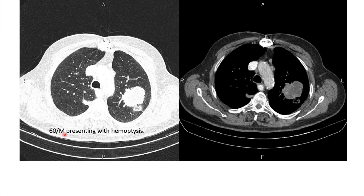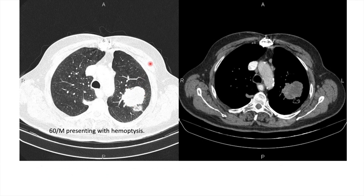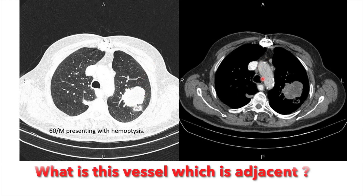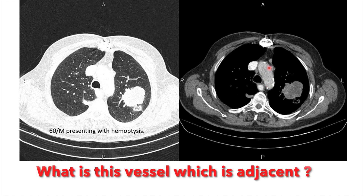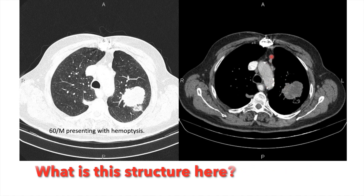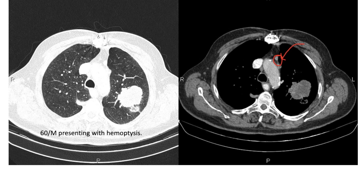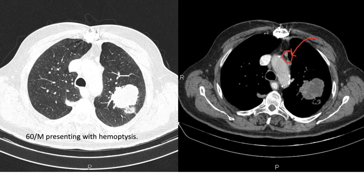This is a 60-year-old male presenting with hemoptysis. We see a mass in the left lung. In which lobe is this mass located? What is this fissure which is adjacent to this mass? And what is this structure here? If you can't answer these questions, then this video is for you.